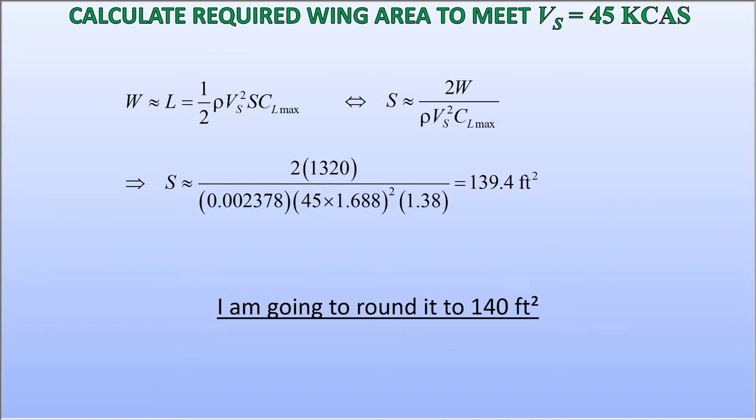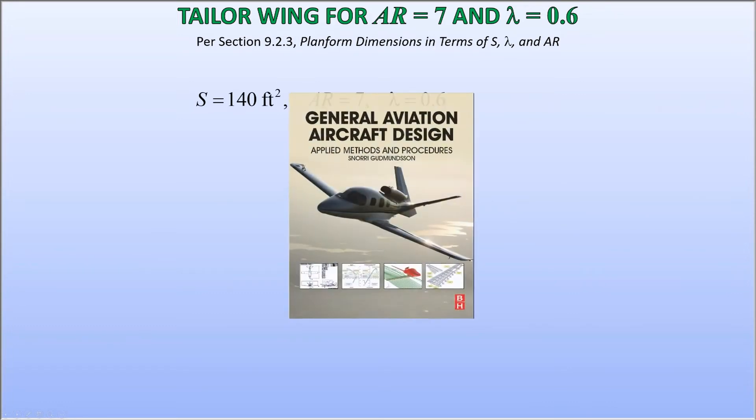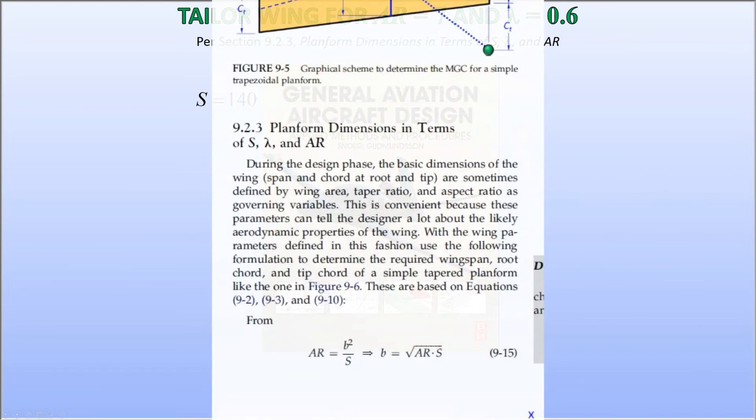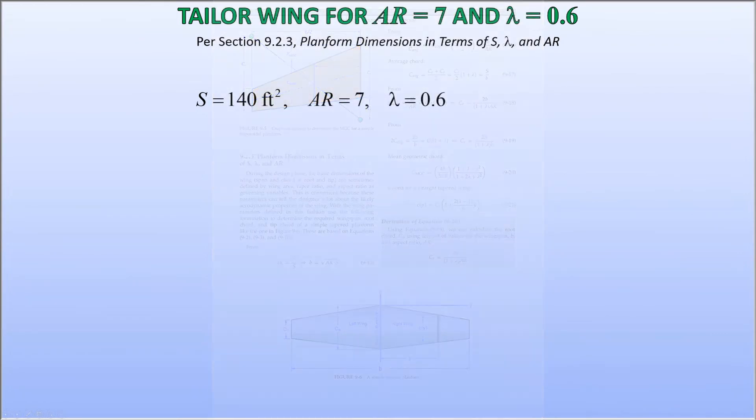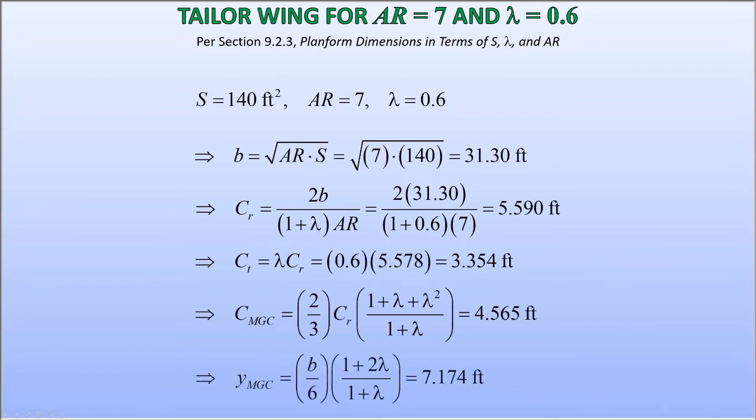Knowing the wing area, we can tailor the wing to yield some desired properties, such as aspect and taper ratios. Here I'm going to assume a common aspect ratio of 7, and taper ratio of 0.6 for the wing. Using the methodology of section 9.2.3 in my book, we can calculate the wingspan B, root chord C sub R, tip chord C sub T, mean geometric chord C sub MGC, and its position on the wing Y sub MGC. This is far more pinpointed than the trial and error approach.